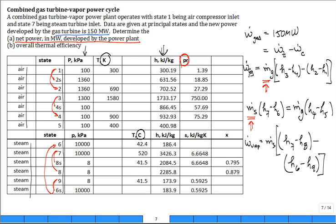Now that we have the power out of the vapor power cycle, the net power developed by the entire plant is what comes out of the gas cycle — 150 megawatts — plus what is produced by the vapor cycle. The steam is in a two-phase region, and what comes out of the condenser at state nine going into the pump is saturated liquid. State six is compressed liquid, and state seven is superheated vapor entering the steam turbine.